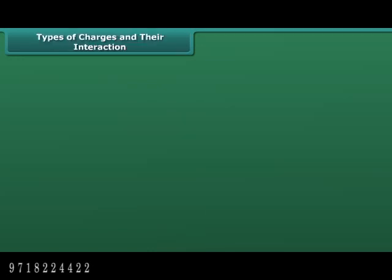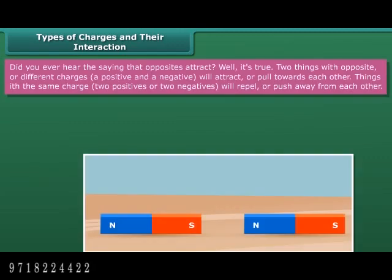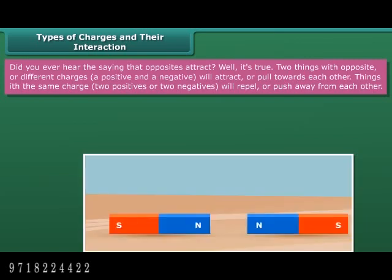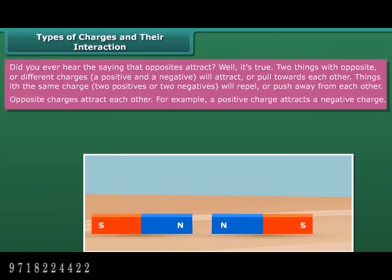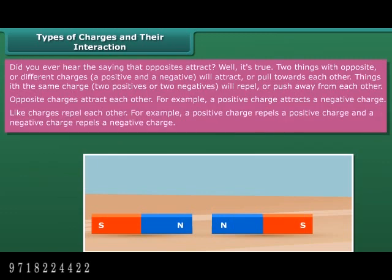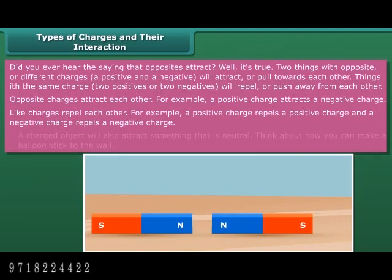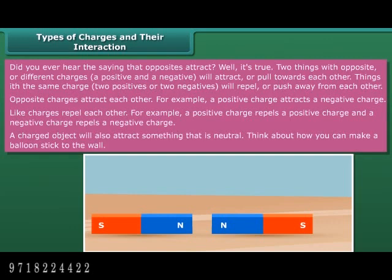There are two types of charges and their interactions follow a clear rule. Two things with opposite or different charges — a positive and a negative — will attract or pull towards each other. Things with the same charge — two positives or two negatives — will repel or push away from each other. A charged object will also attract something that is neutral, such as making a balloon stick to the wall.